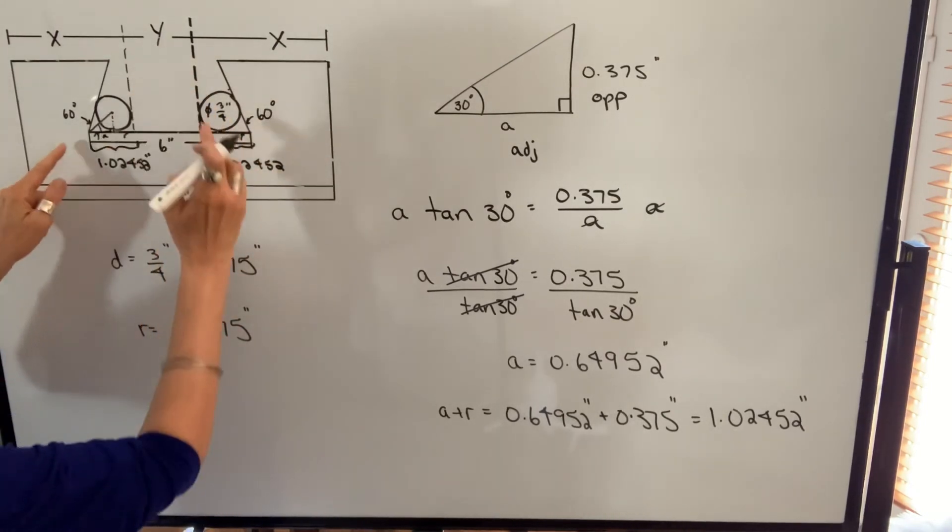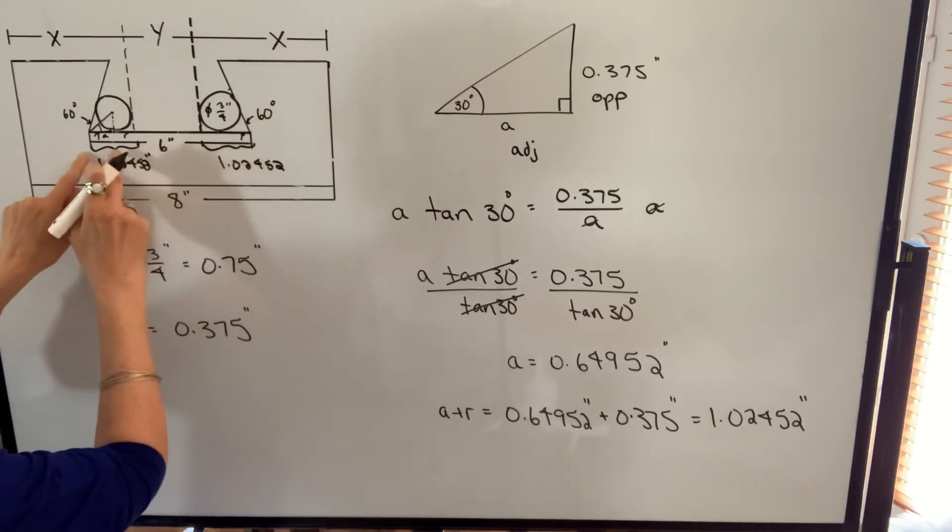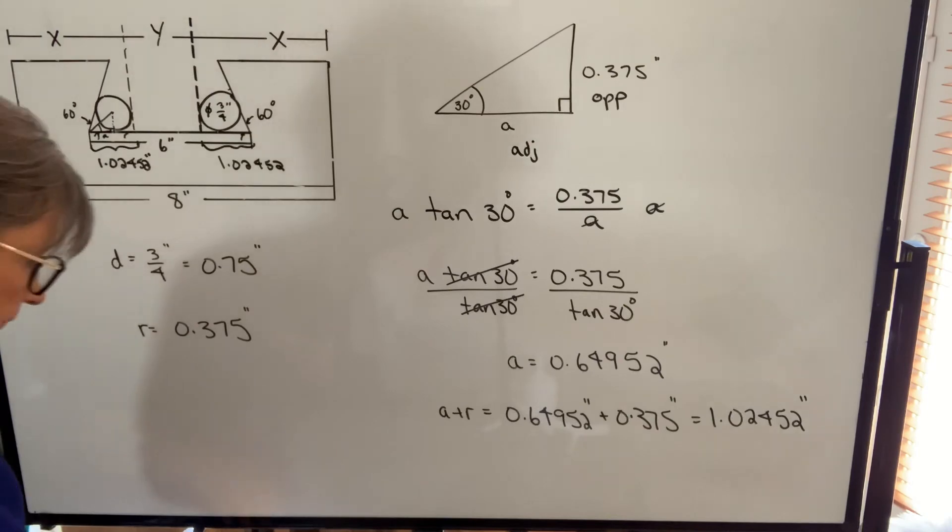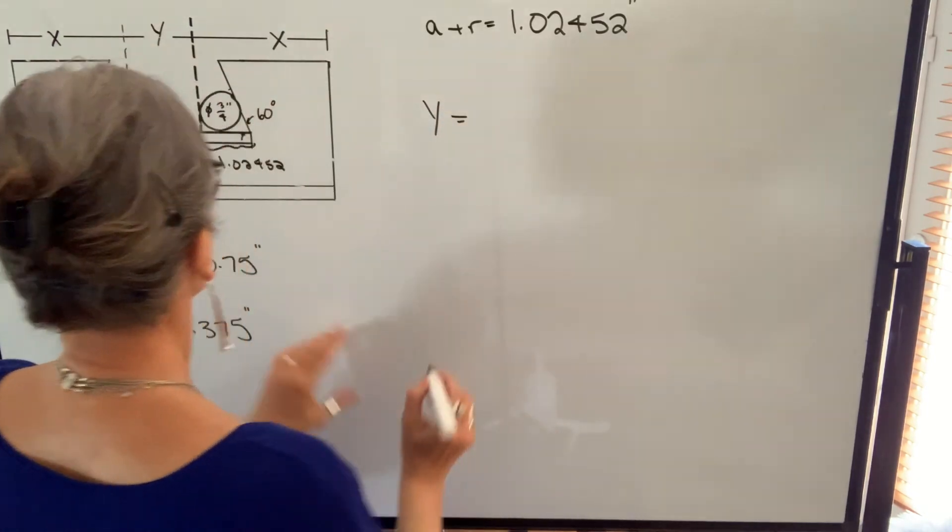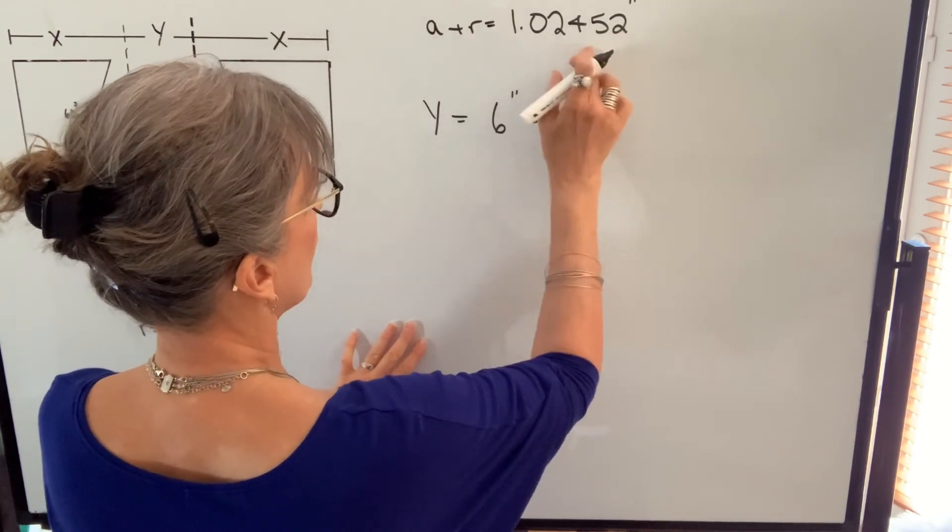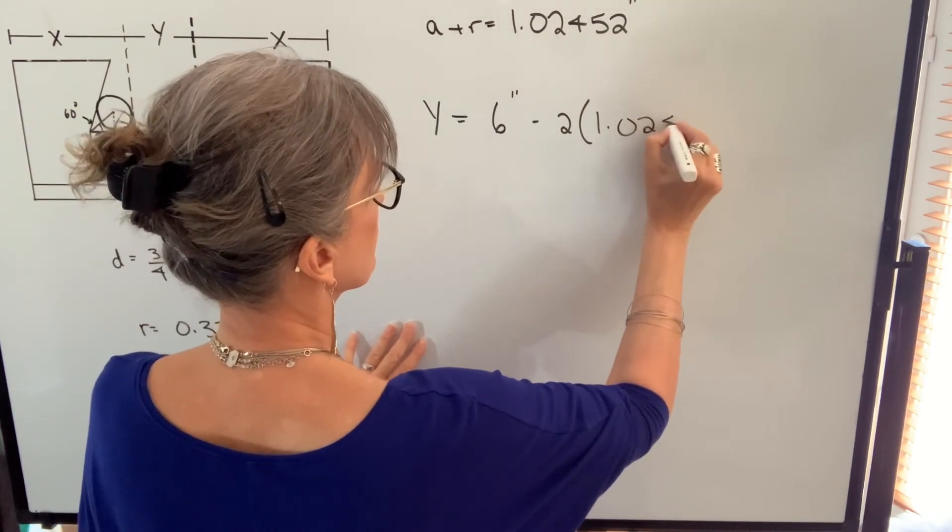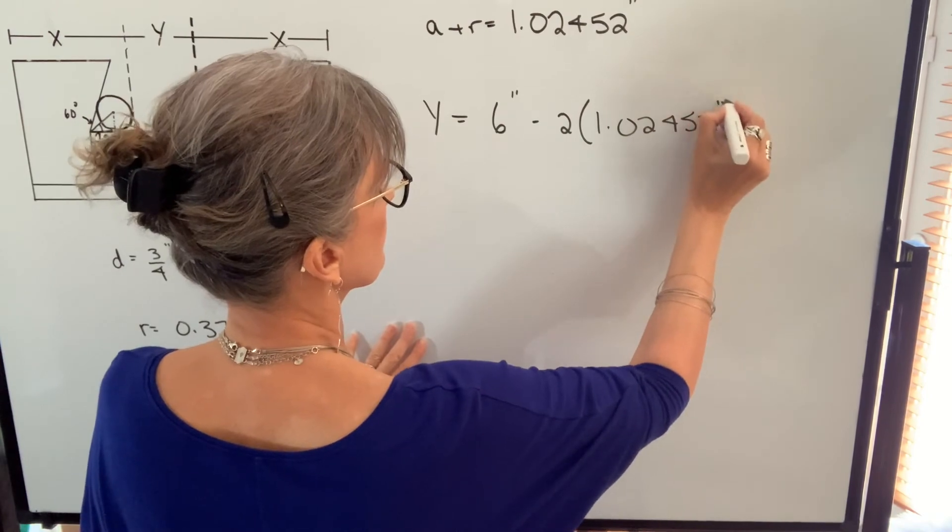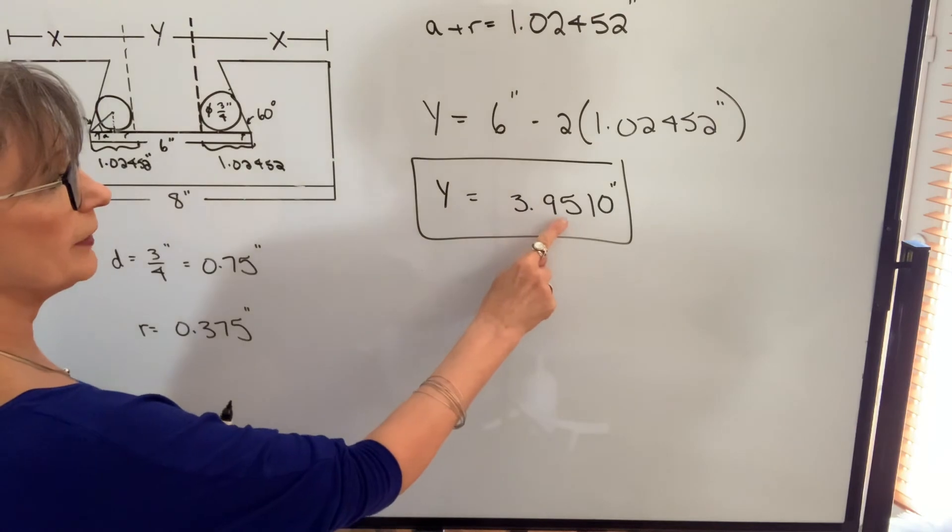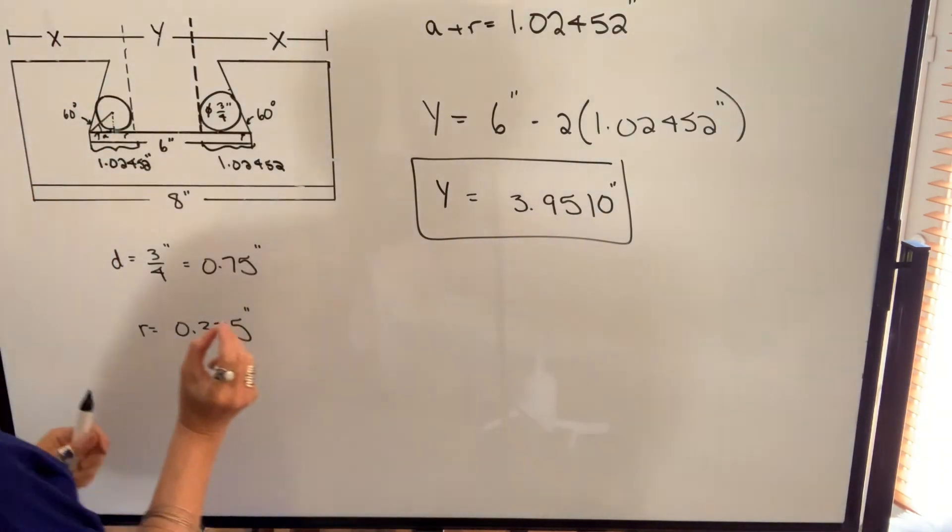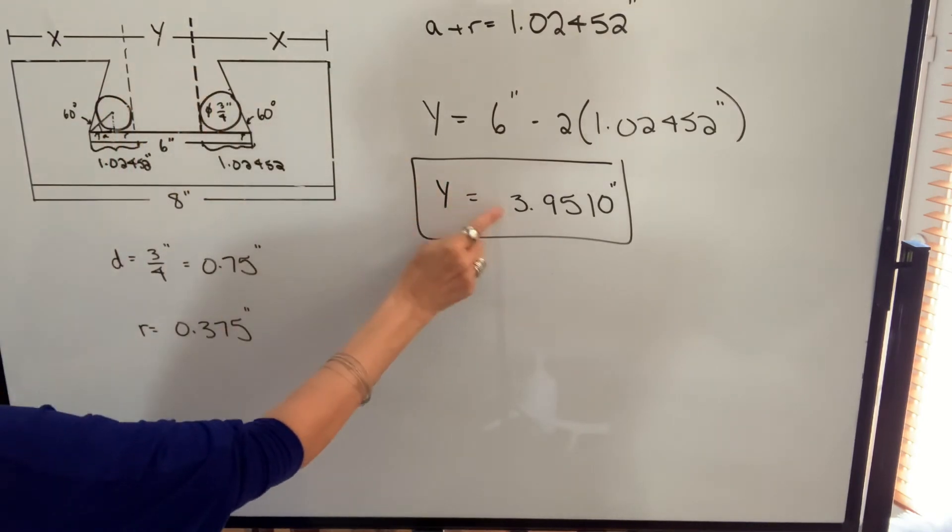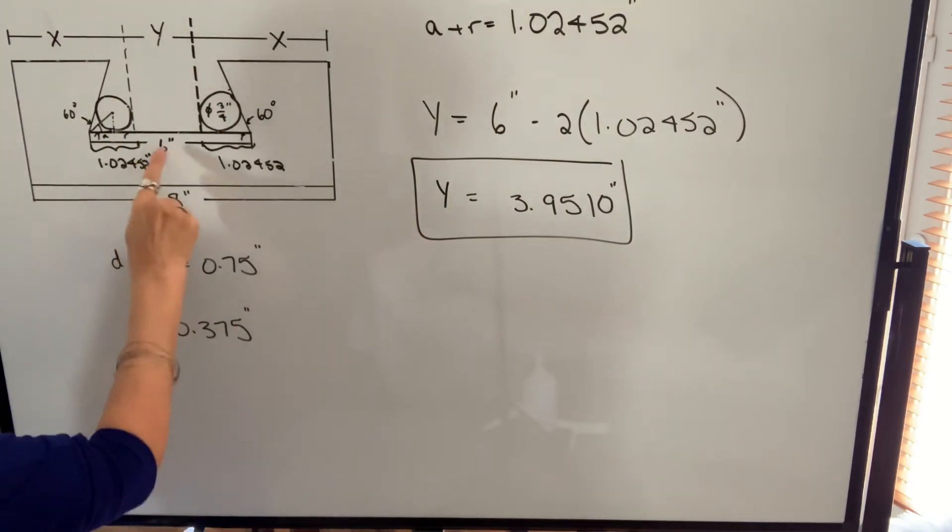Therefore, to find the value Y, I'm going to take 6 and I'm going to subtract this length and this length. And that will give me the Y value. So Y will be 6 inches minus 2 times the A plus R dimension. Y is equal to 3.9510. Therefore, if you were to measure between the crowns of each of those pins, this is the value you should get if your dimensions are correct.